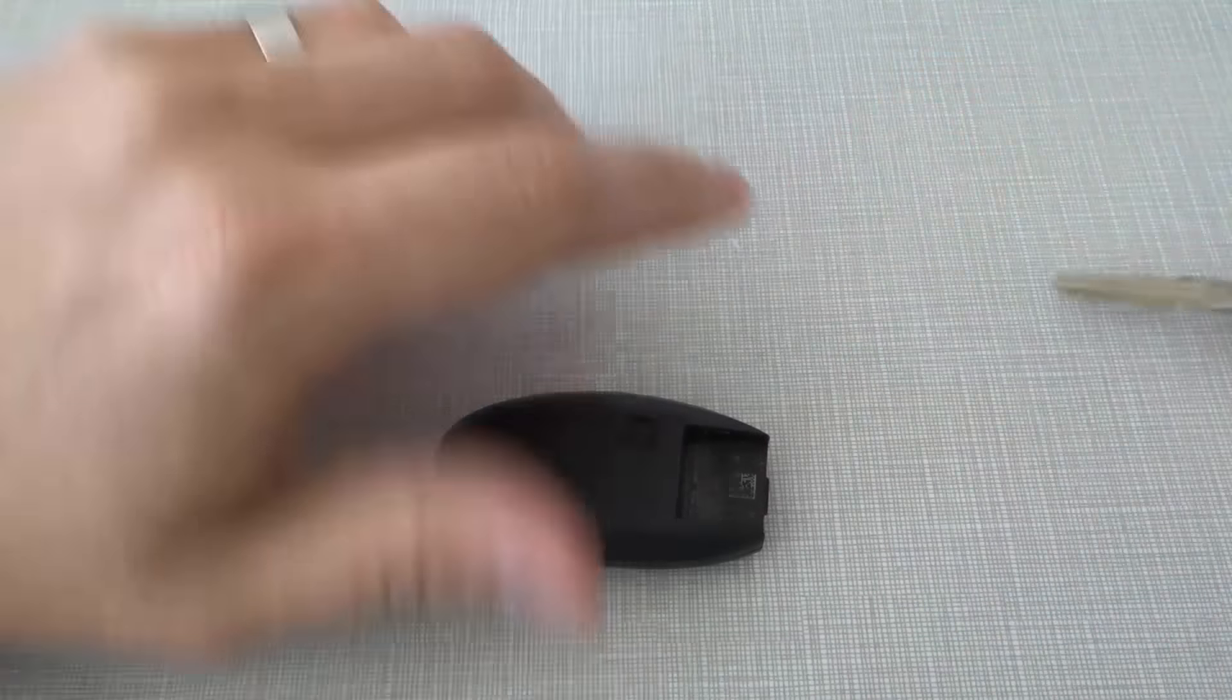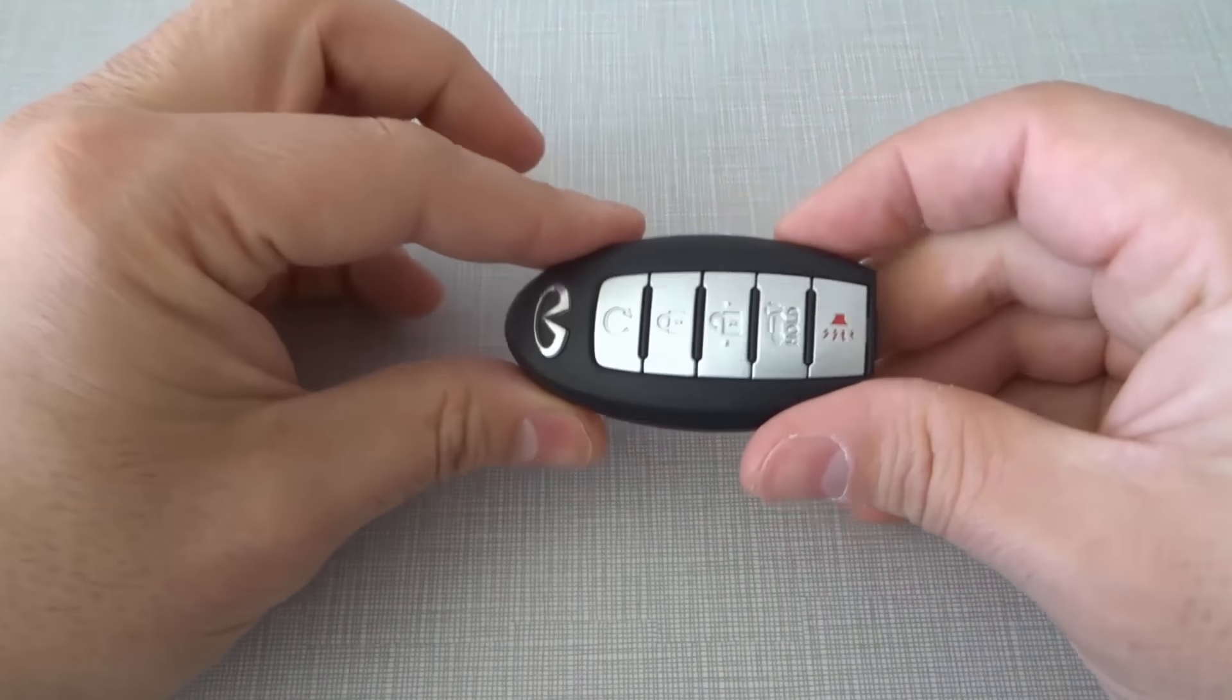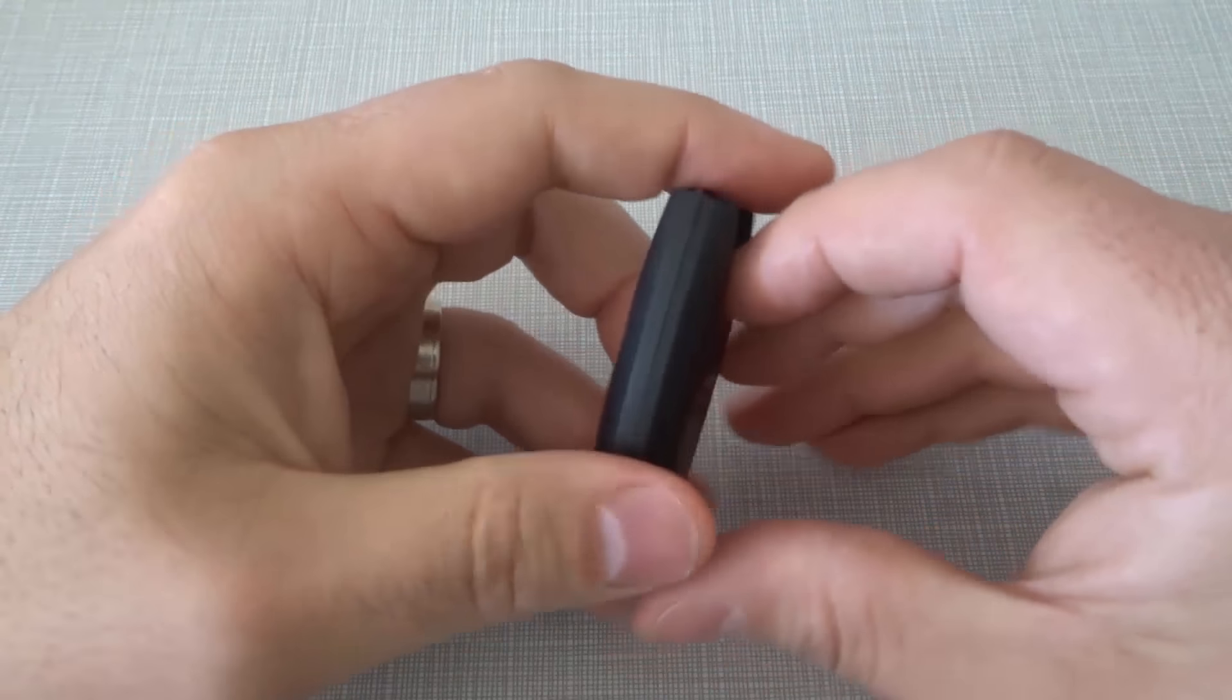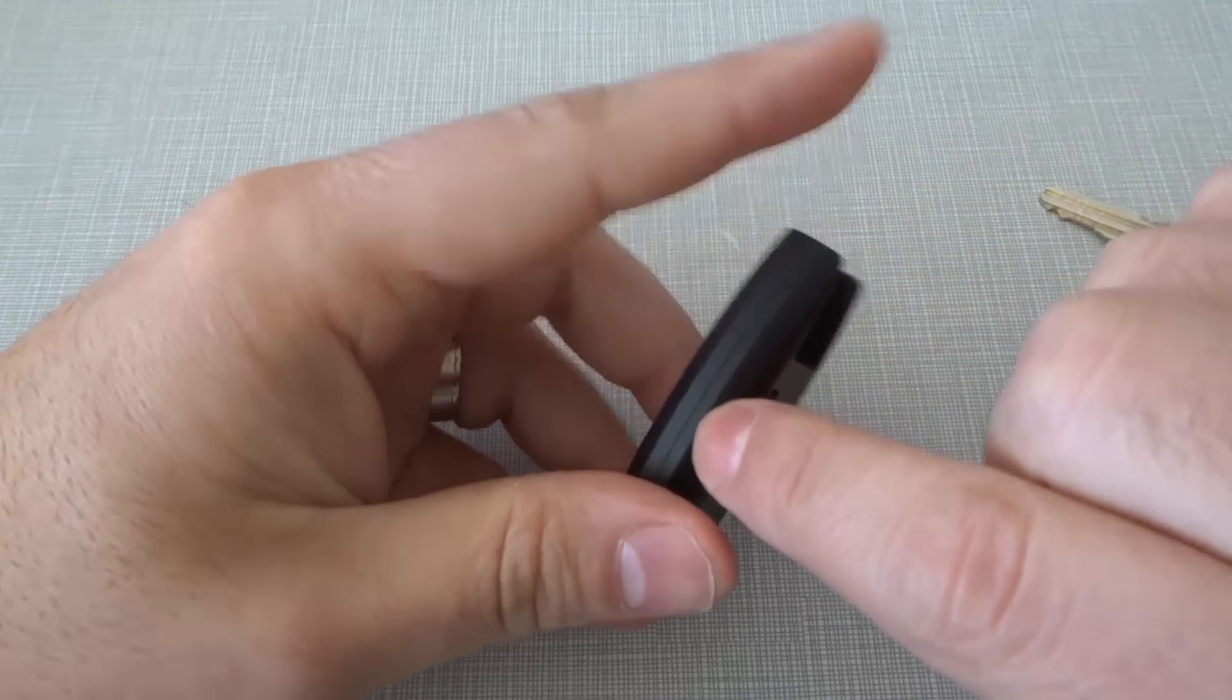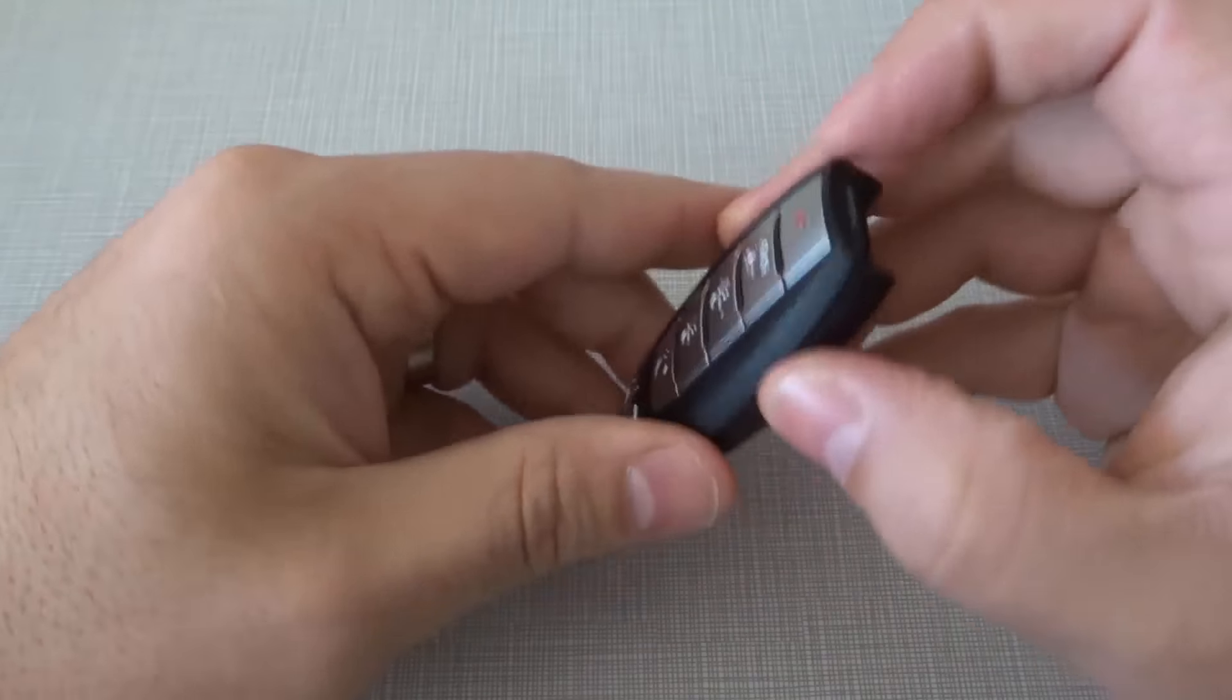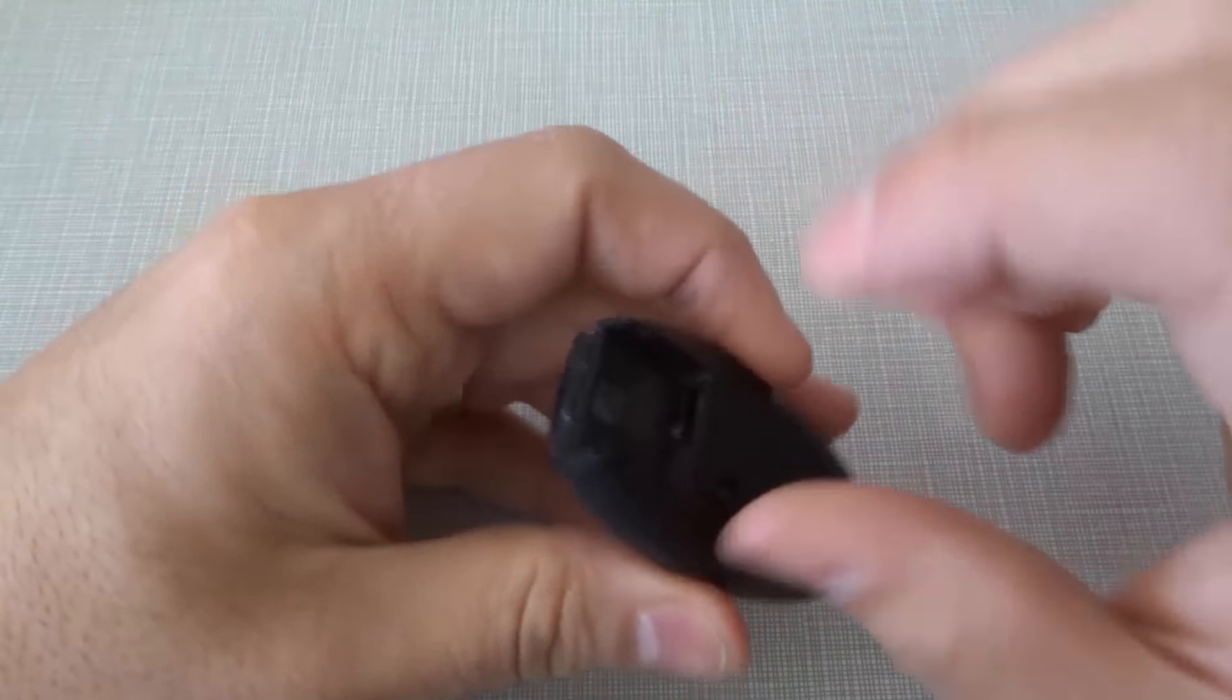I'm just going to place this key to the side, and what we have here is now the key fob itself. Now what you want to do is separate the two halves of the key fob. You can see right here there's a line that goes all the way around the center of the key fob, and you want to separate this half from this half.